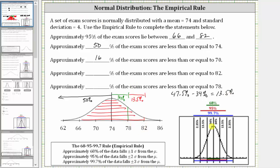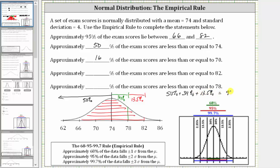Notice how this graph can be helpful because it shows the percentages between standard deviations above and below the mean. So the approximate percent of exam scores less than or equal to 82 is equal to 50% plus 34% plus 13.5%, which is equal to 97.5%.